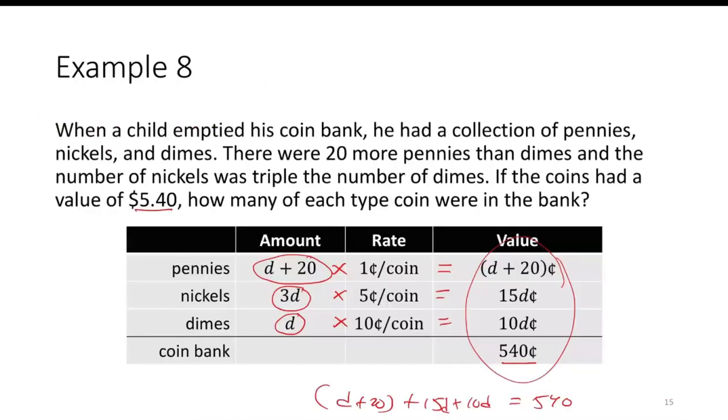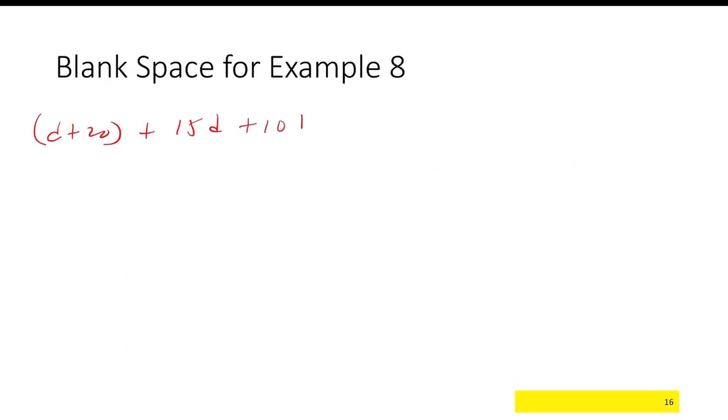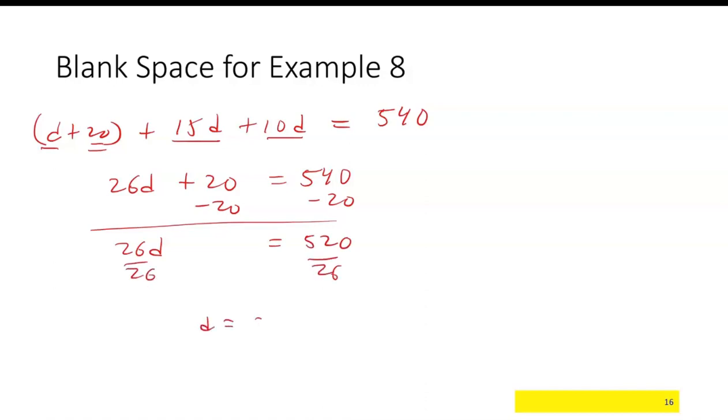Let's rewrite this. We had d plus 20 plus 15d plus 10d is equal to 540. So we have 1d, 15d, so 1 and 15 is 16, plus 10 more d is 26d's. Then there's also plus 20, is equal to 540. Subtract 20. So 26d is equal to 520. And then divide by 26, and d is equal to 20.